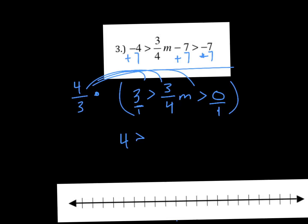Four thirds times three fourths just gives us one M. So I'm just going to leave that as M. And zero times anything or zero times four thirds is just going to be zero. So I'm going to rewrite this so that my lower number is first. And then both my inequality signs will be correct. So that's my inequality.